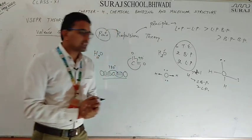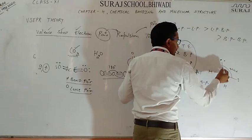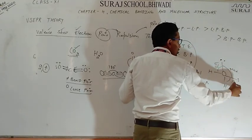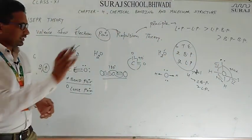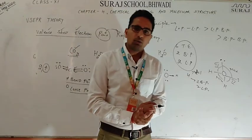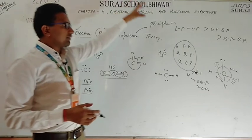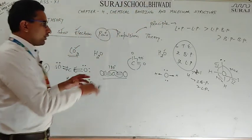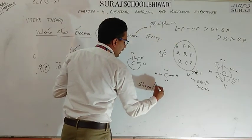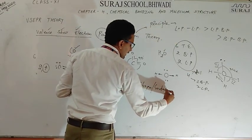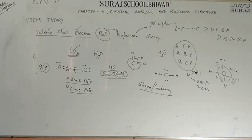This is the structure. In the next video, you will see the shape and geometry of molecules. You can apply the principle of valence shell electron pair repulsion to find the shape of geometry. If you don't know the shape of geometry, you can do it in the next class.